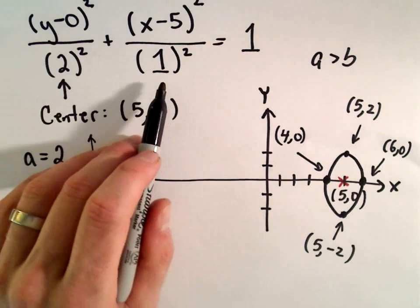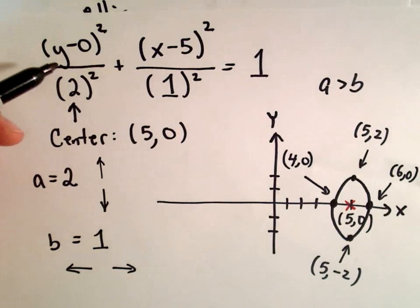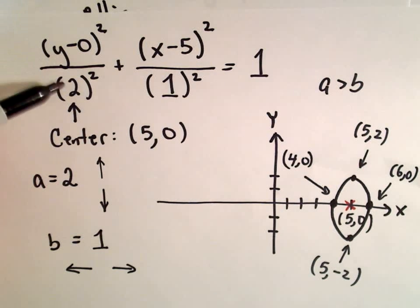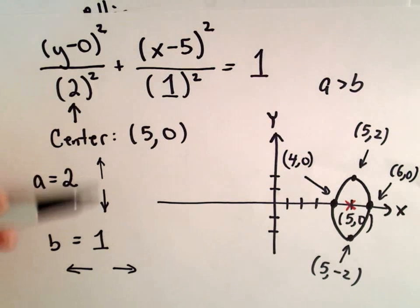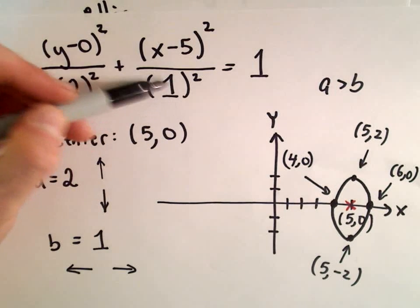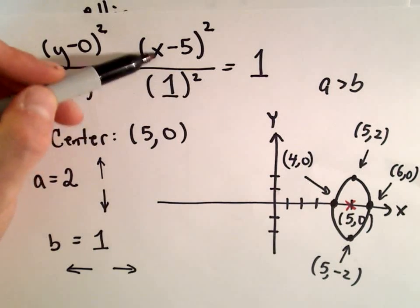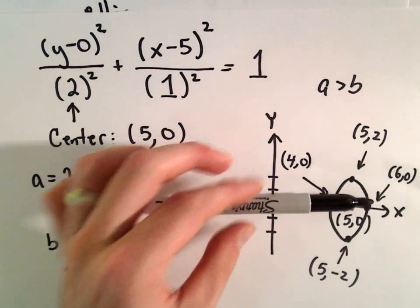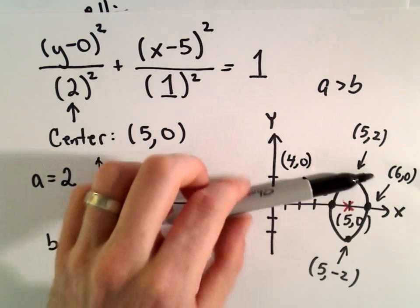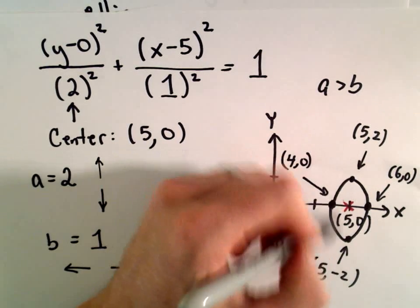And then I look at my a value or my b value. If it's underneath, I look at the numerator. That tells me how many units I either go up or down. For example, if you look underneath the term involving x, the b value is 1. x, I think about the x-axis. That's to the left and to the right. So that helps me remember what direction to go to get my other points.